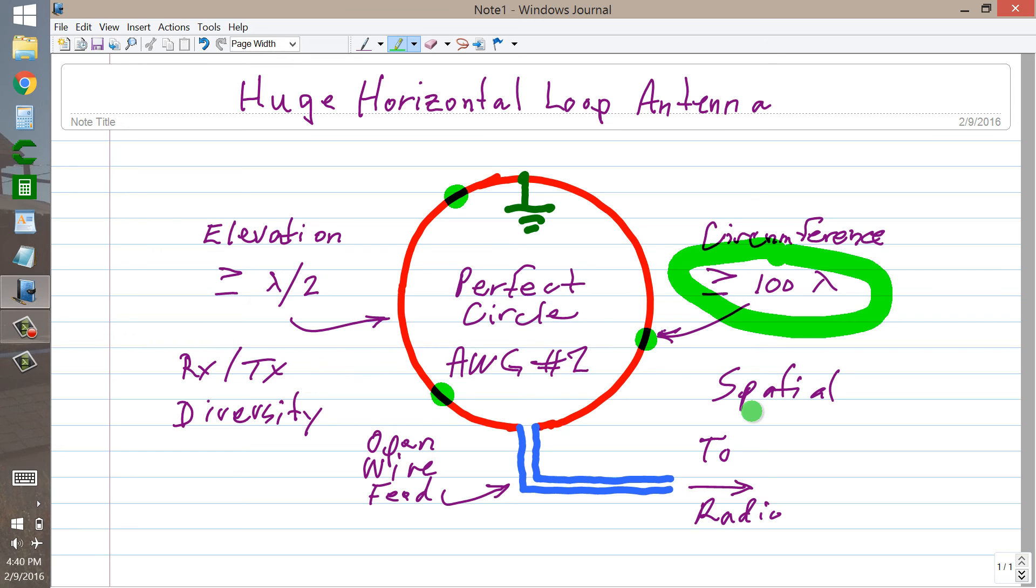I think what you're going to get, though, most importantly, is spatial diversity, transmission, and reception, which will minimize QSB, that is fading, on all of the bands that you use this antenna for. I think.